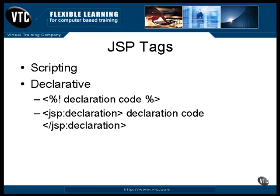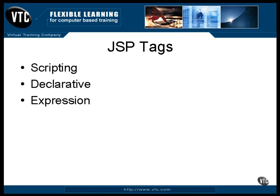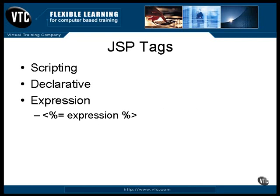The third category of tags is the expression tag. The expression tag uses an equal sign, and it looks like this. It also has an XML form. An expression is something that's evaluated to become a string and is displayed as text. You can use Java code elements in here, but this is more than just Java — there's a special expression language you can use to make evaluations. I'll be showing you some of that later.